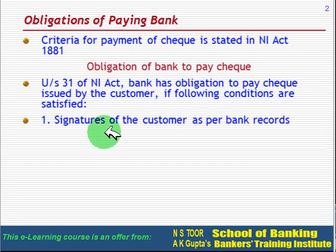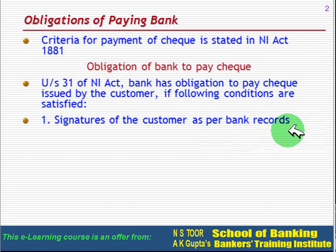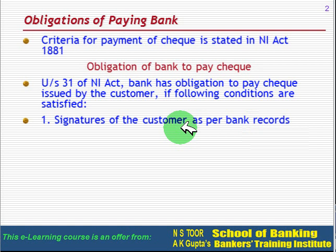First, the signature of the customer must match the records of the bank. If the signatures of the customer are different from the bank's records, then the bank has no obligation to make the payment.